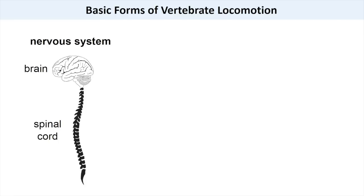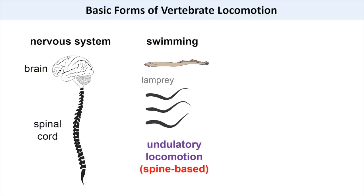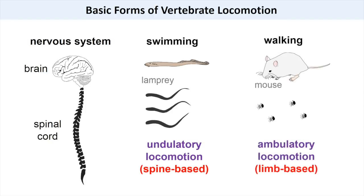One of the most important functions of animal nervous systems is the control of locomotion, the ability to move from one place to another. Vertebrates typically display one of two basic types of locomotor behaviors. In the majority of fish species, locomotion is driven by the activation of muscles located along the spine, a type of locomotion referred to as undulatory. In land vertebrates, ambulatory motor behaviors such as walking require a precise control of muscles in the limbs.